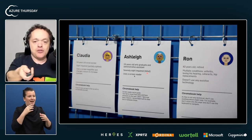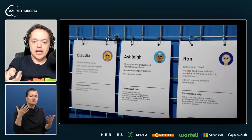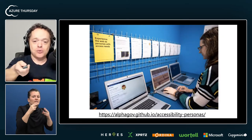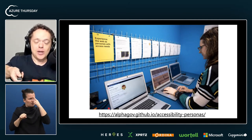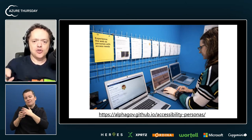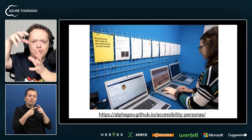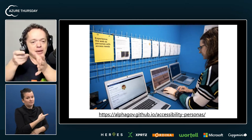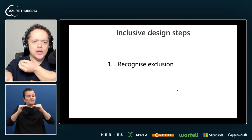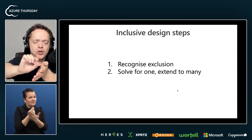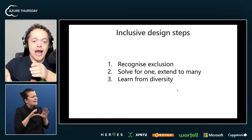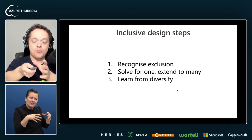You use persona spectrums — Claudia, Ashley, and Ron. Ron is an 82-year-old retired person with multiple conditions: arthritis, losing his hearing, possibly visual impairment also. You take Ron and you build around your system. You can go to alpha.github.io/accessibility/personas and start to realize that the bubble you were in, you can actually pop it — because you can become these people. And you start to look at inclusive design: recognize exclusion, understand that you're excluding Ron, then solve for one and extend to many, and finally learn from diversity — have diverse teams.